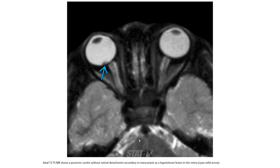This axial T2 MRI shows posterior uveitis without retinal detachment, secondary to toxocariasis, presenting as a high-signal lesion in the retina.